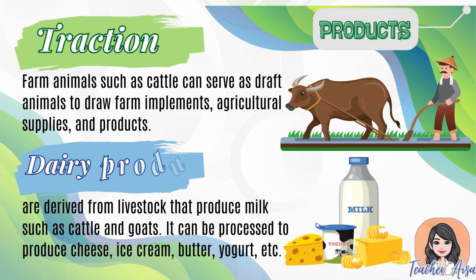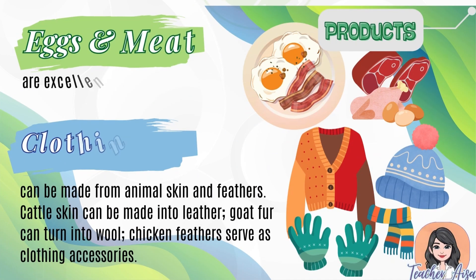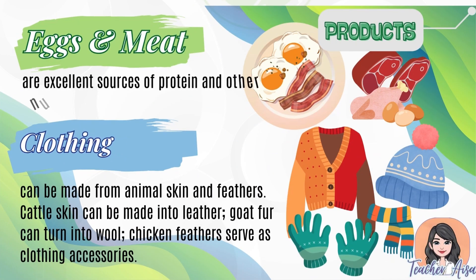Traction: farm animals such as cattle can serve as draft animals to draw farm implements and agricultural supplies and products. Dairy products are derived from livestock that produce milk, such as cattle and goats; they can be processed to produce cheese, ice cream, butter, yogurt, etc.